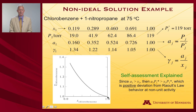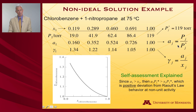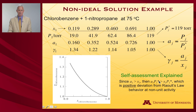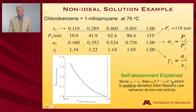The answer is positive deviation from Raoult's law. All you need to do is look at the activity relative to the mole fraction. Since the activity is greater than the mole fraction, a_1 times P*_1 is larger than X_1 times P*_1, so the vapor pressure line lies above the ideal Raoult's law linear line.